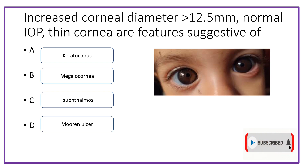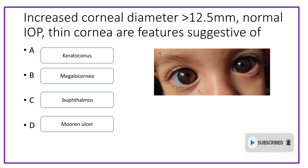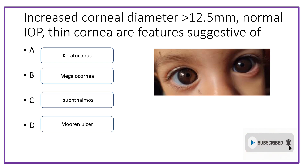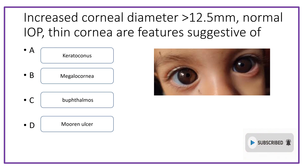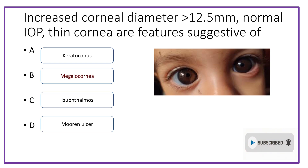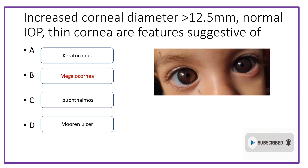Coming to the last question: where do you see all these features — increased corneal diameter of greater than 12.5 mm, normal IOP, and thin cornea? The options are keratoconus, megalocornea, buphthalmos, or Mooren's ulcer. The answer is megalocornea. That's all for the video today. If you like my video, kindly like, share, and subscribe to my channel. Thanks for watching.